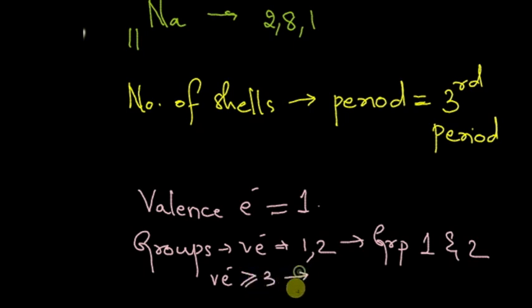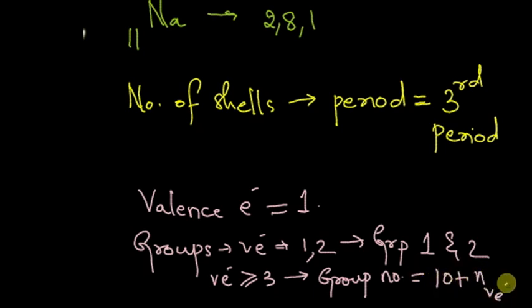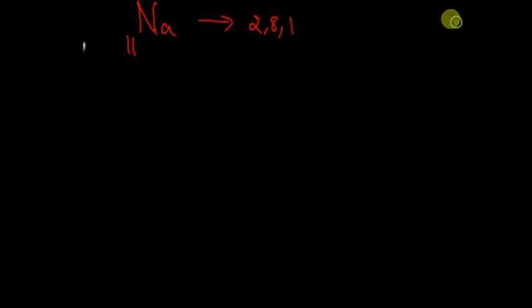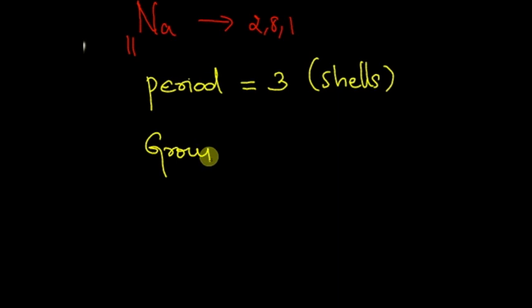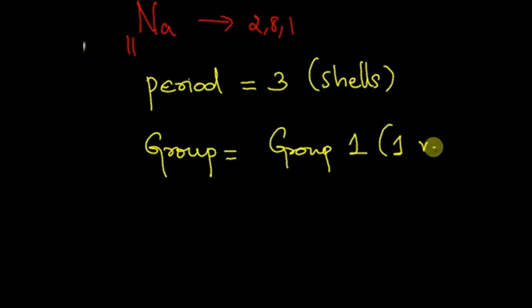When the number of valence electrons is 3 or more, we find the group number by adding 10 to it — so the group number would be 10 plus the number of valence electrons. Coming back to sodium with atomic number 11 and configuration 2, 8, 1 — it has three shells, meaning it is in the third period. With 1 valence electron, the group number is 1. So sodium belongs to group 1 and period 3.